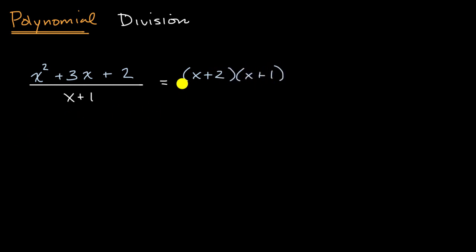And so we could express x squared plus three x plus two as x plus two times x plus one, and then all of that is going to be over x plus one. And so if you take x plus two times x plus one and then divide that by x plus one, you're just going to be left with x plus two.